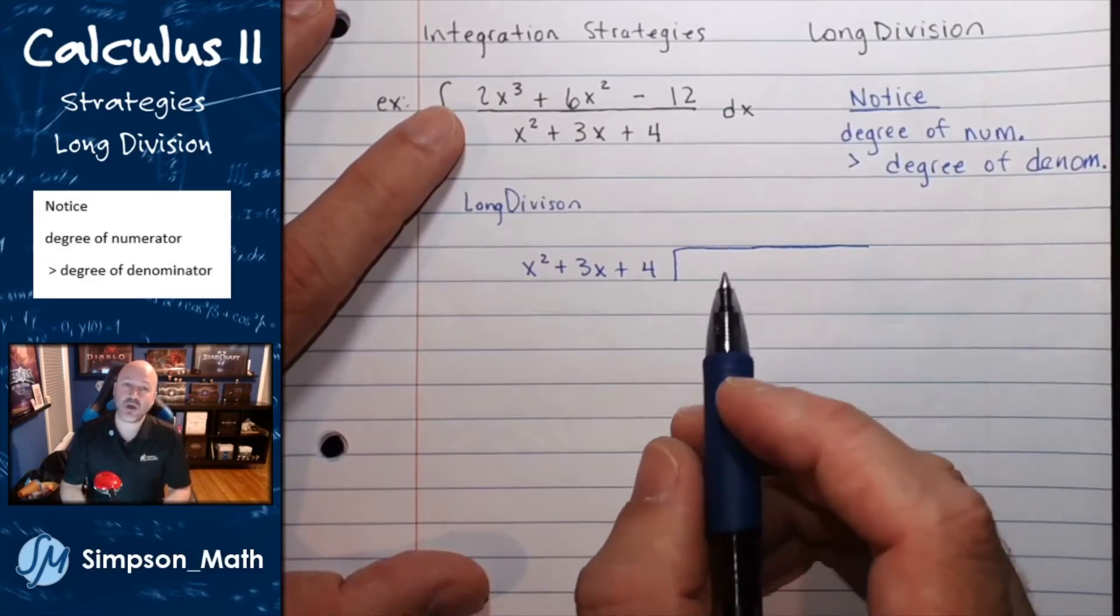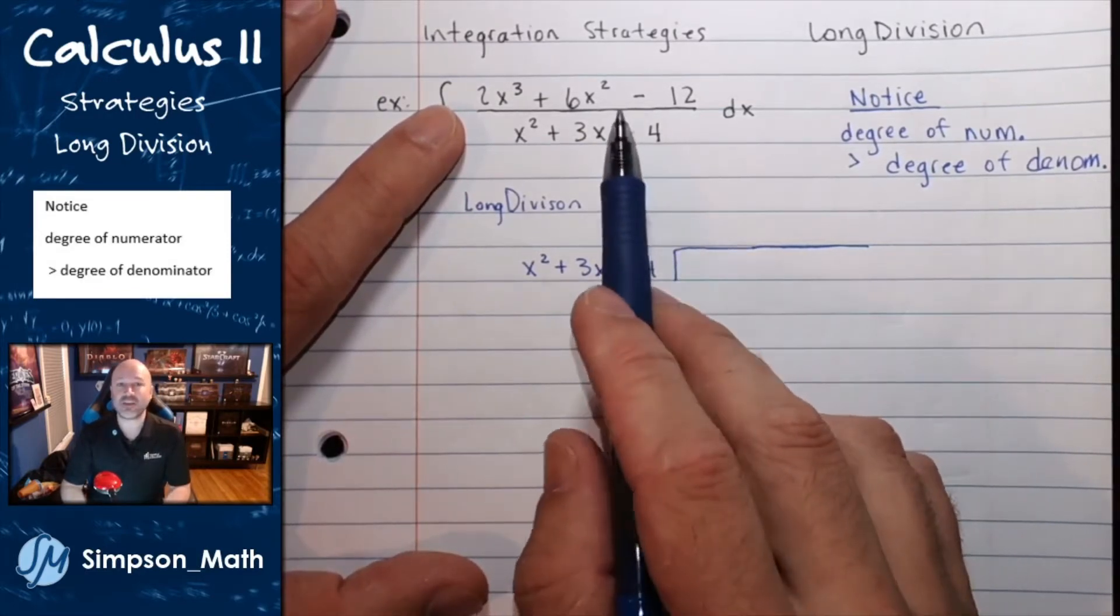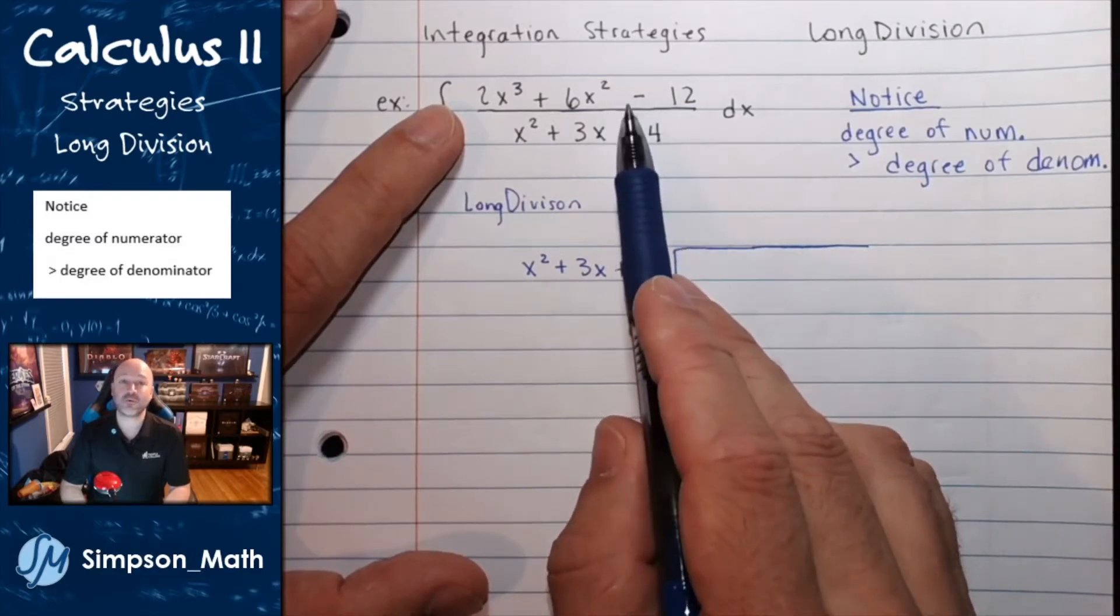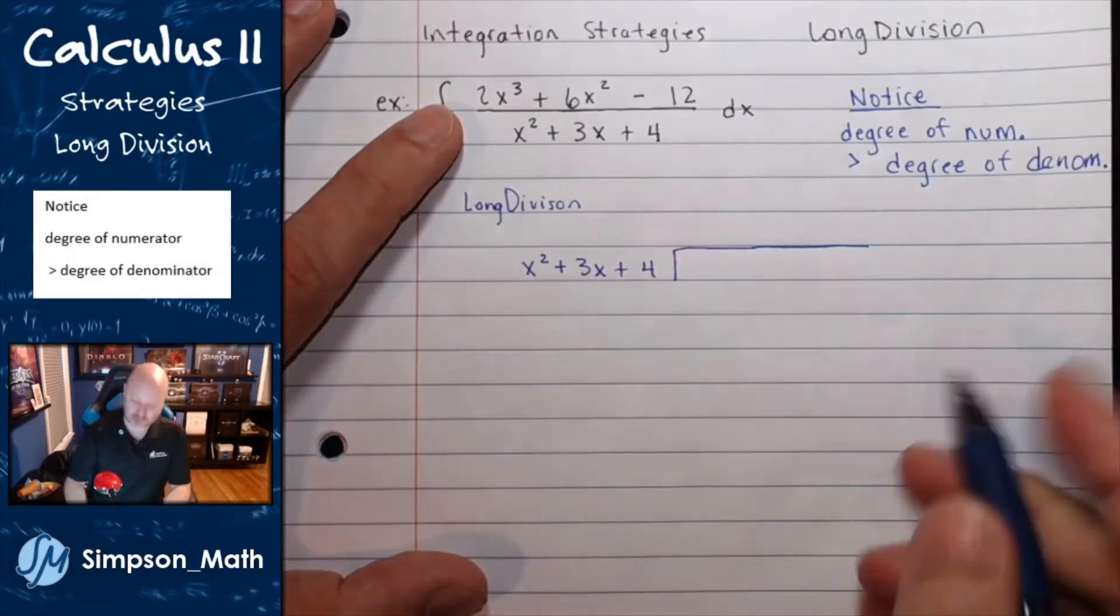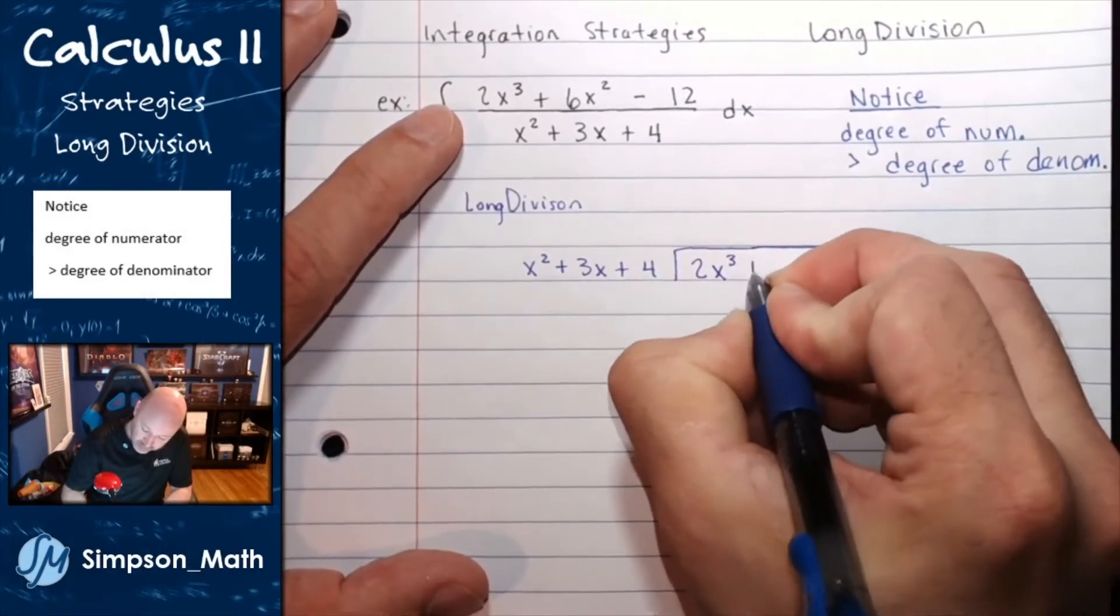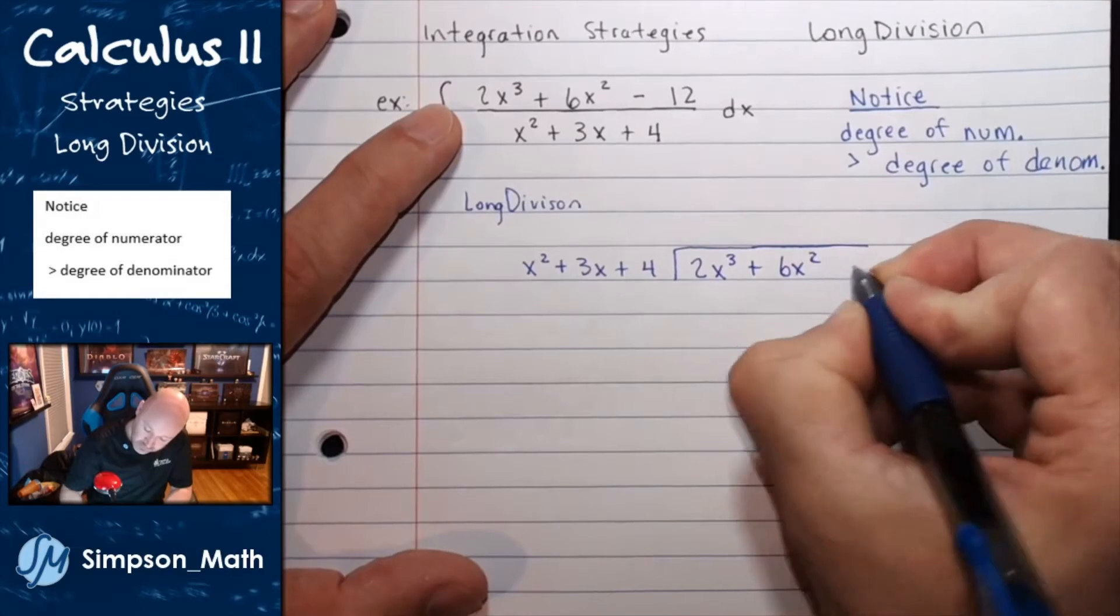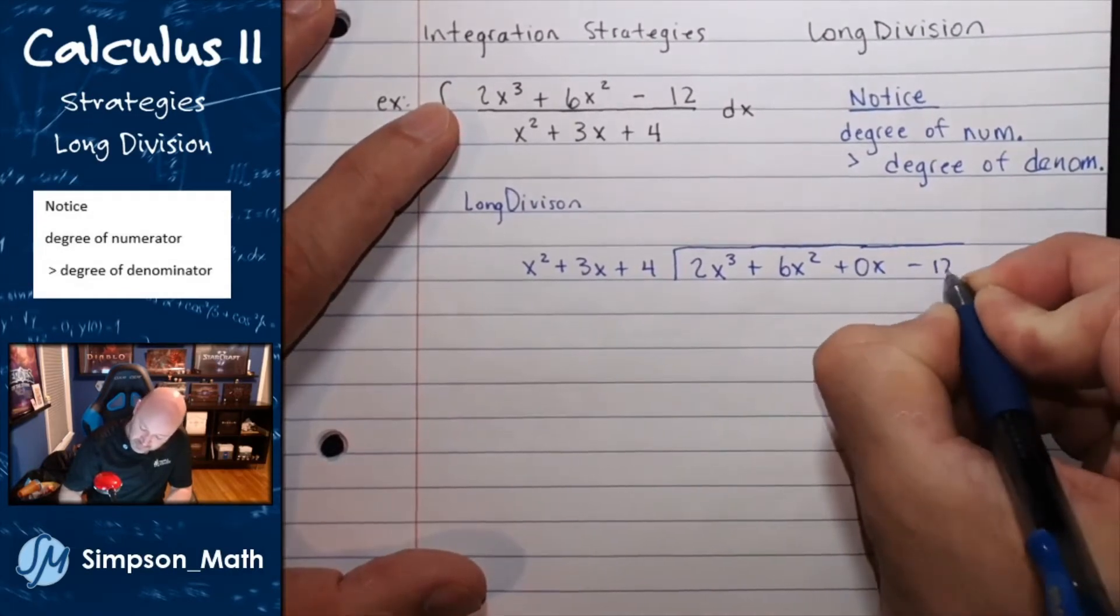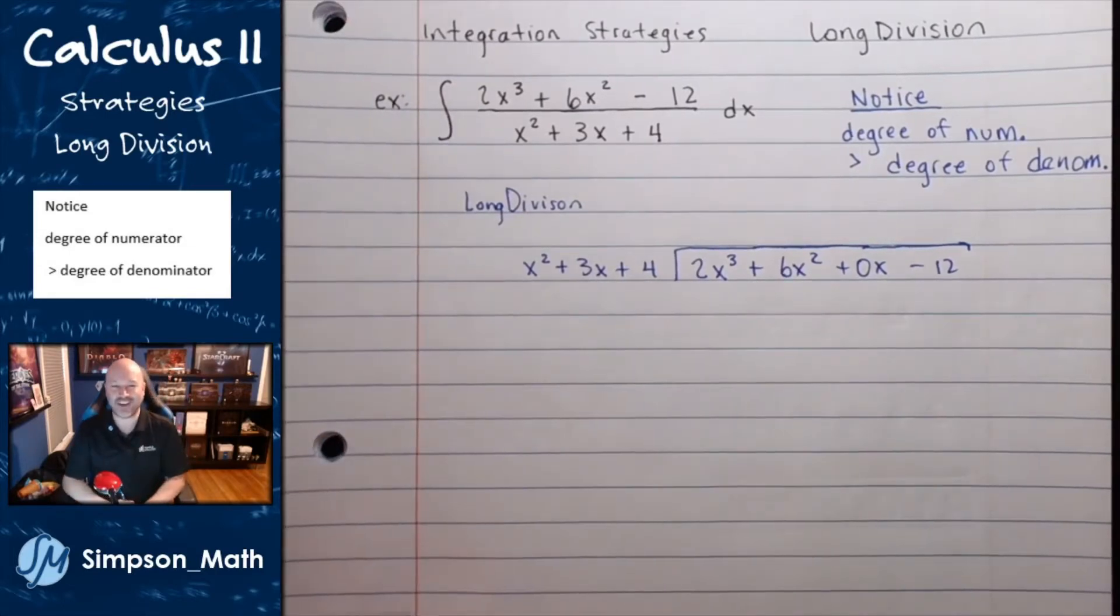Now, this is division, so you need placeholders if anything is missing. Notice, I don't have a linear term, so I'm going to have to use 0x to the first power. Inside, I'm just recopying my numerator, using 0x as a placeholder, and then I'm going to just long divide.